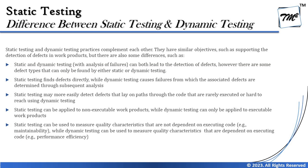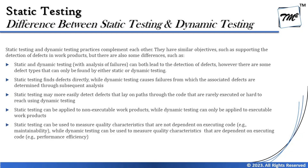Static testing can be used to measure quality characteristics that are not dependent on executing the code — for example, maintainability: the way the code is written, number of commands, indentation, blocking, etc. Dynamic testing can be used to measure quality characteristics that are dependent on executing the code, such as security testing or performance testing — for those, you have to run the system with the desired load.